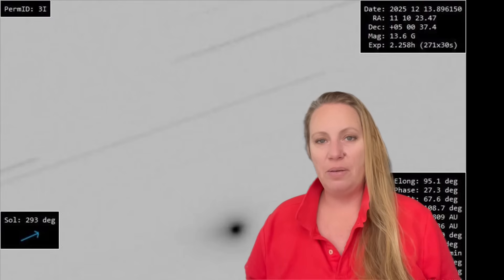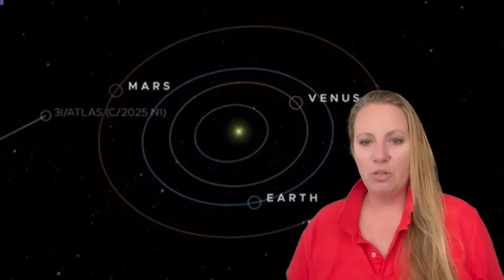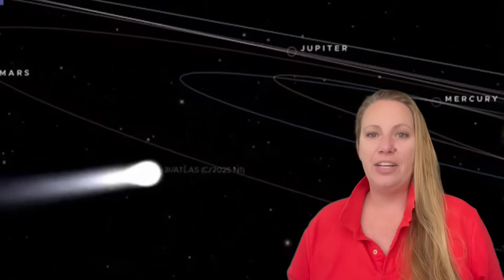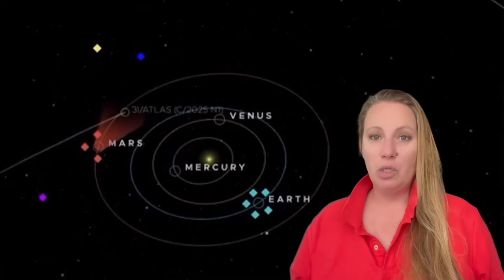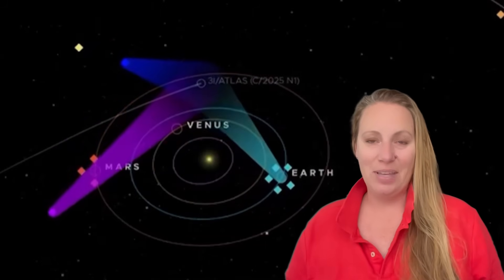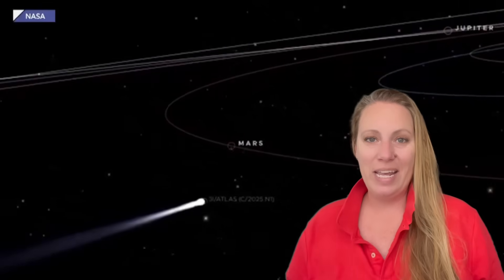3i Atlas has now turned green in new images - it has changed color. This is something new and very important to talk about, especially since 3i Atlas is reaching its closest point to Earth. December 19th is the date where we have a chance to observe it the closest.